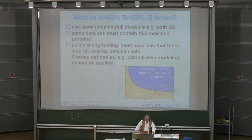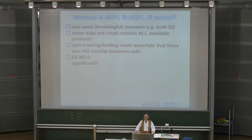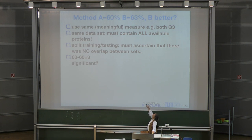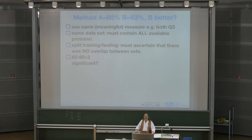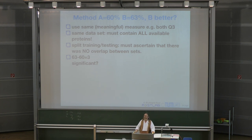When we get to the next issue, assume we took care of all of that. We take the same proteins, look at the same measures, testing and training have no overlap. One method gets 60, one gets 63. The question now boils down to: is it significant? Back to what you said before — you're right, it depends on what you mean by better. But now I'm refining my definition: is it statistically significant?